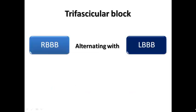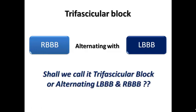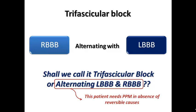Some authors define trifascicular block as alternating left and right bundle branch block, because such a patient has near-complete blockade in both the left and right bundle branches. The term 'alternating left and right bundle' is preferred by some because it is a specific entity in which the patient requires a permanent pacemaker, as there are no reversible causes — it is considered a warning sign of impending complete heart block.